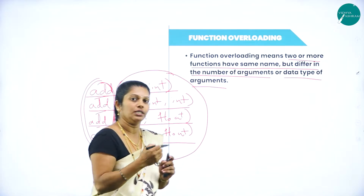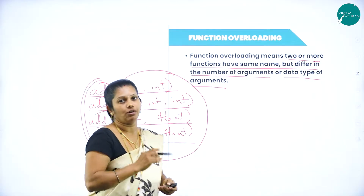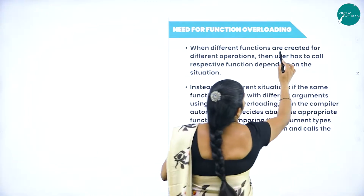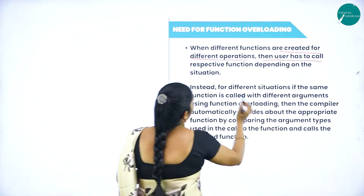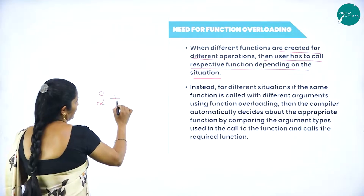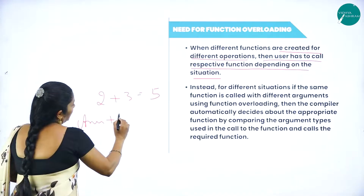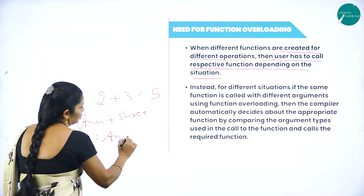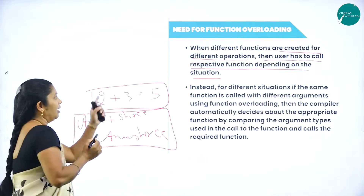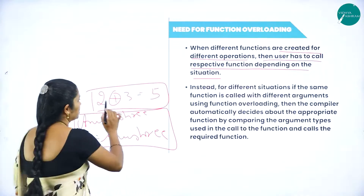In a viva, the examiner will definitely ask what do you mean by function overloading. Why do we need function overloading? When different functions are created for different operations, the user has to call the respective function depending upon the situation. For example, 2 + 3 gives 5, but 'Anu' + 'Shri' gives 'AnuShri' — both use the plus operator.